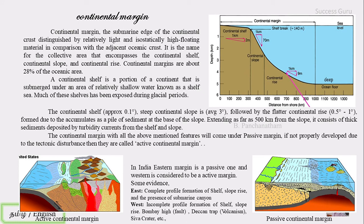When we apply this to India: the eastern margin, which is the Bay of Bengal side, is a passive margin, whereas the western margin, the Arabian Sea side, is considered an active margin. On the east there is a complete formation of the continental shelf followed by the continental slope then the continental rise. You can also see submarine canyons, which are a peculiar feature on this side.